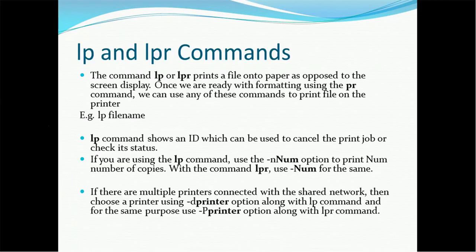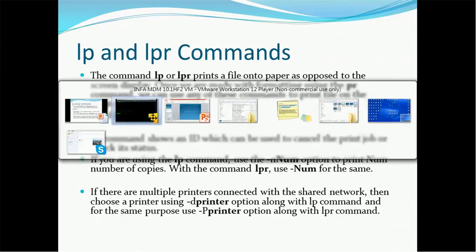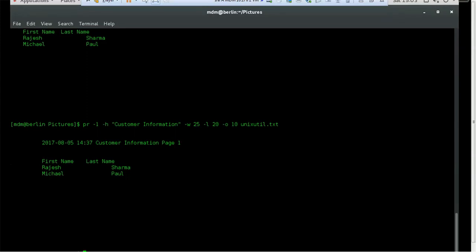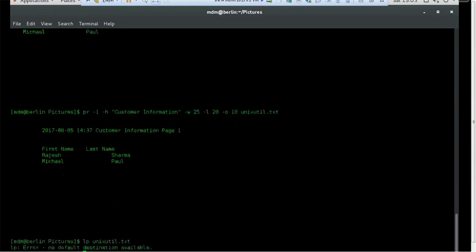Now, related to printing: LP and LPR commands are used to send data to the printer. The LP or LPR command prints a file onto paper as opposed to a screen display. Once we are ready with formatting using the PR command, we can use either of these commands to print the file. First format the file, then give the command LP followed by the file name. For example, LP unix_util will send it to the printer. Currently my system is not configured for a printer, so we're getting the message 'no default destination available.'